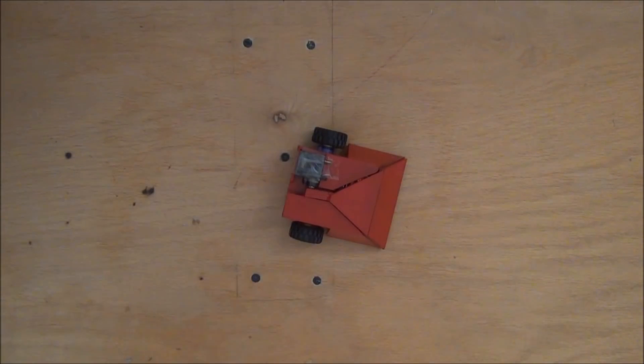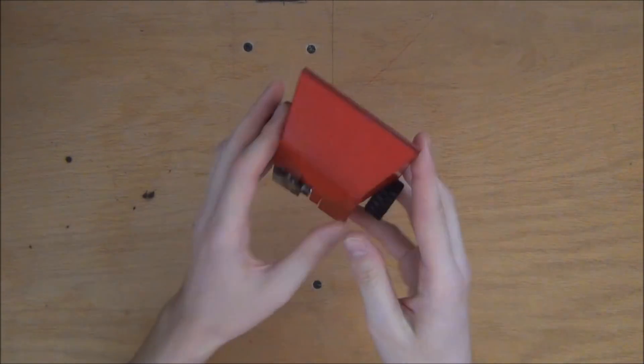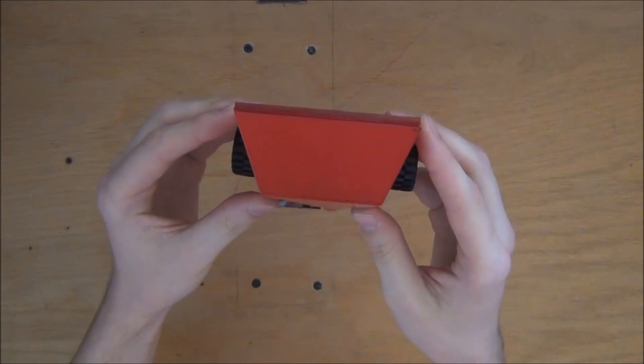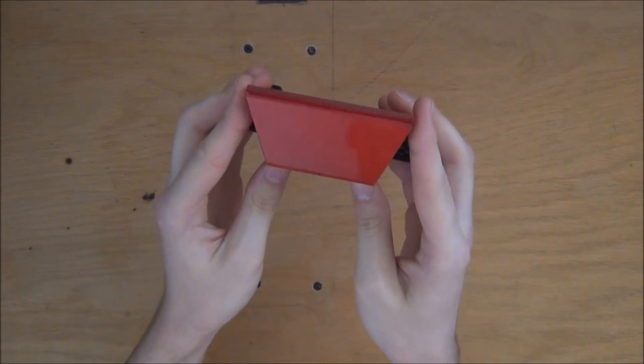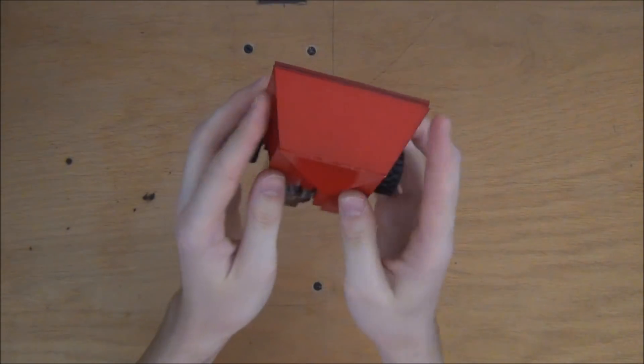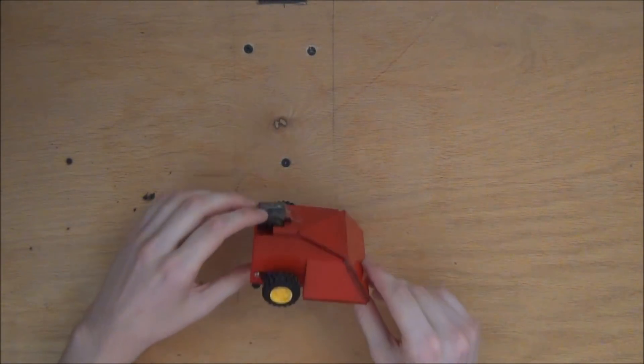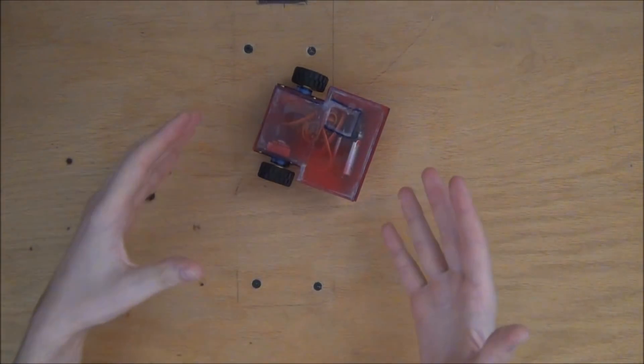So quite a few things have changed since the first video. One of which is the actual front angle. The robot used to be a lot more square in the front and I've put some angle in there. And that's so if you flip it up over on the side, it can flip right to its top and then flip itself back over.